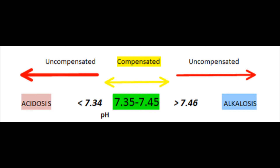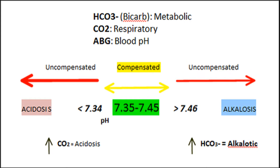The body has several buffer systems. If these work well, it is going to be the compensated stage where the pH is going to be normal. But if these mechanisms fail, then we're going to go into the uncompensated or decompensated phase. We have two types: metabolic and respiratory.